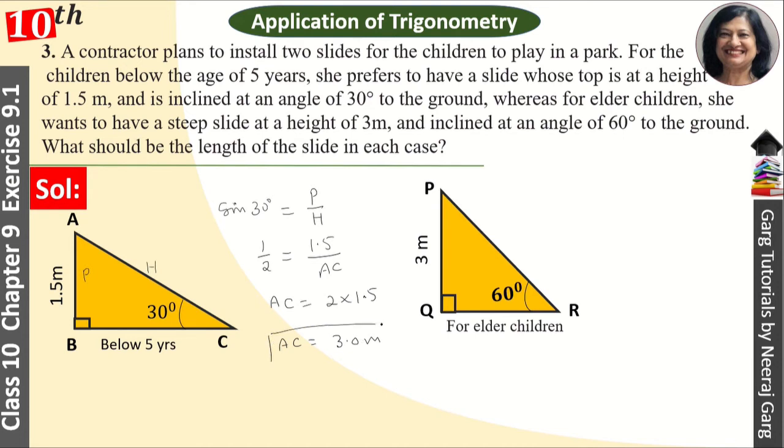So this is the answer. Now we will take the other triangle. We will solve the other triangle. We will solve the triangle with the 60 degree angle and the 3 meter height. So we will install the triangle with 90 degrees at the base.